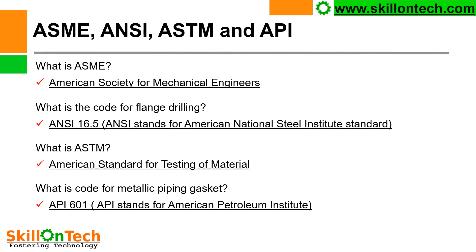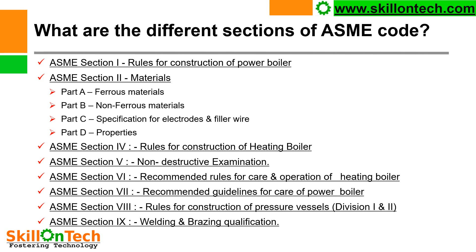ASME, ANSI, ASTM and API are important codes used for mechanical engineering. ASME is American Society for Mechanical Engineers. What is the code for flange drilling? ANSI 16.5. ANSI stands for American National Steel Institute. ASTM is American Standard for Testing of Material. What is the code for metallic piping gaskets? API 601. API stands for American Petroleum Institute. All metallic piping gaskets such as spiral wound gaskets are designed and manufactured as per API 601.